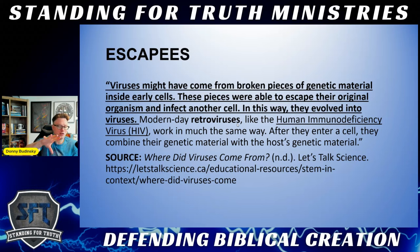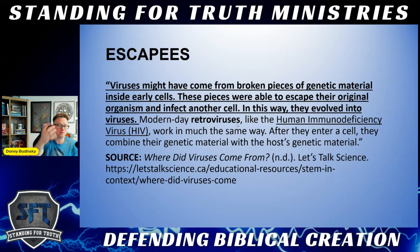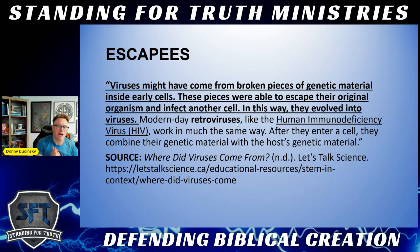The biblical model can make sense of that which the evolutionary model struggles to explain. They're onto something with the escapee hypothesis, but they can't make the ultimate conclusions because they have an incorrect starting point — erroneous presuppositions and false assumptions. When you have the biblical starting point, everything becomes clear.